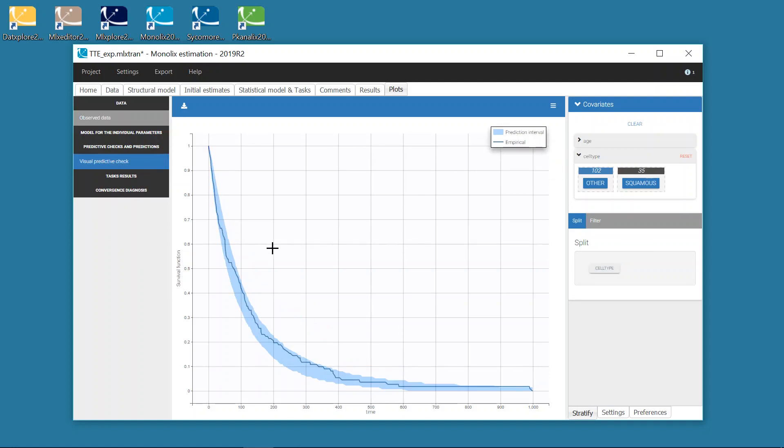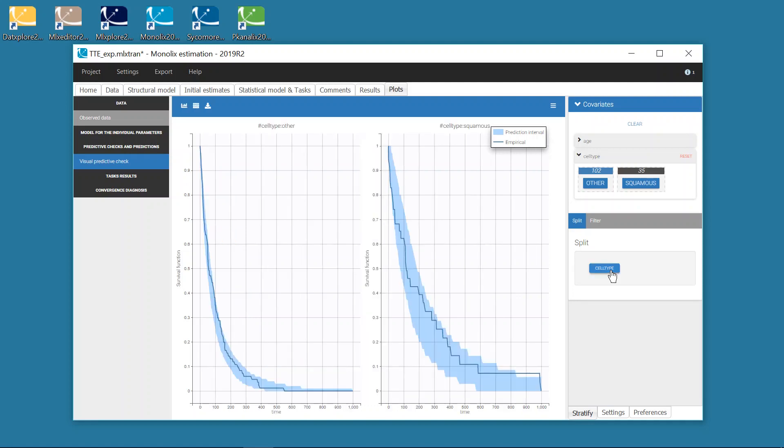On this plot, the 90% prediction interval for the survival is displayed as a blue area and can be compared to the Kaplan-Meier estimate representing the data. Here, the model shows a good predictive power, and it is true as well when splitting by cell type. I could then use this model to simulate new simulations with Simulix.